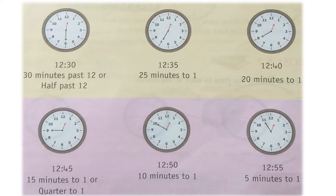After moving five more minutes, the minute hand reaches ten. 45 plus 5 is 50. So the time is 12:50, or 10 minutes to one, because there are 10 more minutes remaining to reach one o'clock.